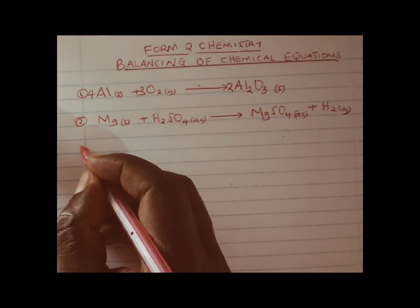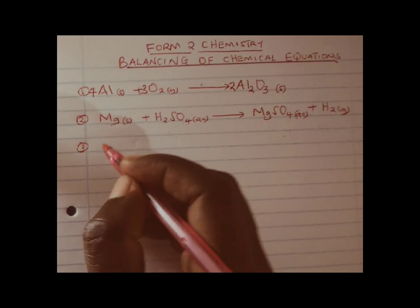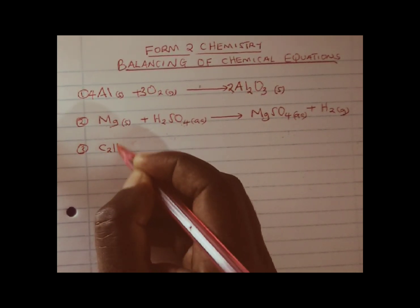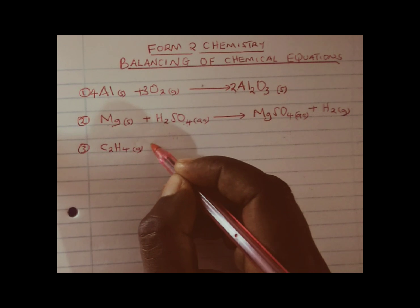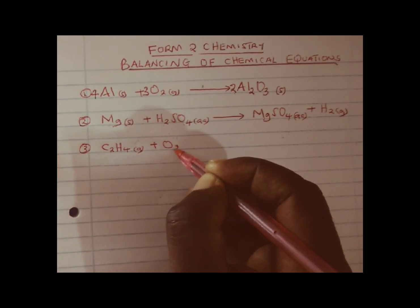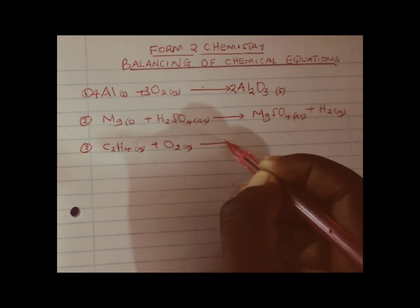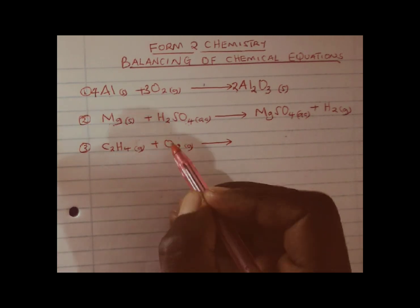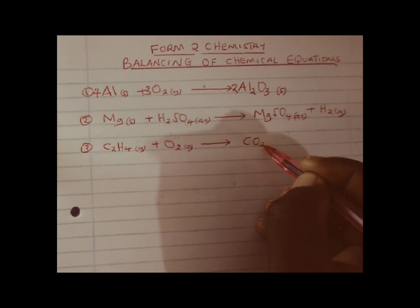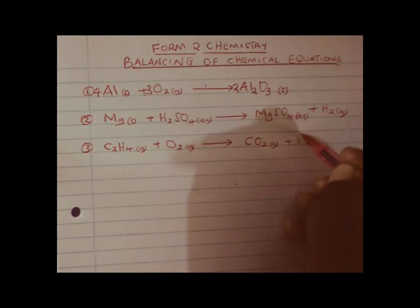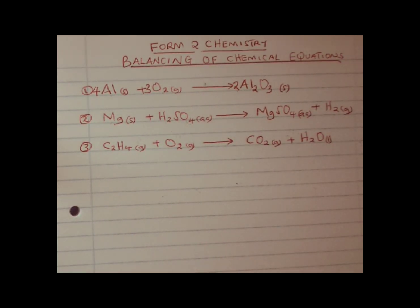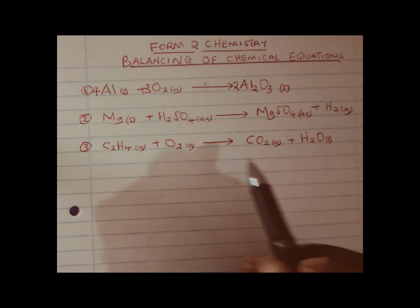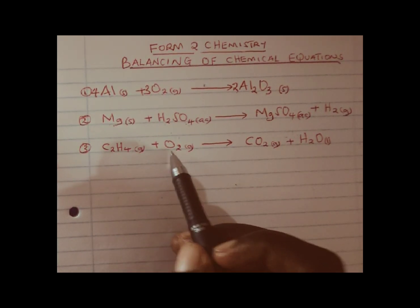Let us look at example number 3. We consider the reaction between ethene gas, that is C2H4 — this is a hydrocarbon, a compound of carbon and hydrogen — reacting with oxygen gas. Remember, when you burn a hydrocarbon in air it will always give us 2 products: carbon dioxide and water. Remember, water is a liquid, and therefore we use (l). Let us try to balance this equation, considering the elements on the reactant side and those of the product side.